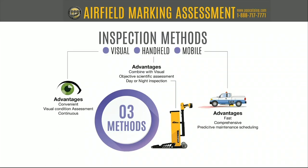Another great advantage of the mobile device is that you can use it in predictive management scheduling. If you do this enough times you'll be able to say, 'This particular area on this radius is going to wear twice as fast as this other area,' and therefore schedule it to be painted twice a year rather than once a year. So those are the inspection methods: visual, handheld, and mobile.